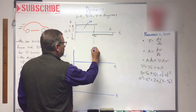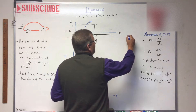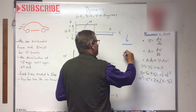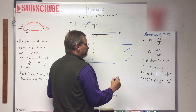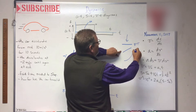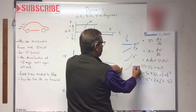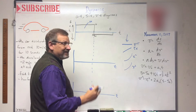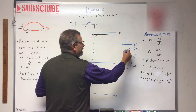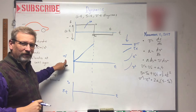Do you remember from shear-moment diagrams how we talked about the order of the lines? If I have a constant (flat) function, the integral of that is a linear slope, then a parabola, then a cubic — y equals 5 integrates to 5x, then x squared, then x cubed, right on down the line. It's the same with these curves. So if the acceleration curve is flat, the next line down — velocity — is going to be a linear slope. The velocity starts at zero since the car started from rest.